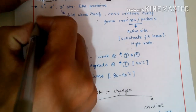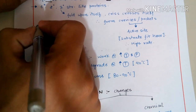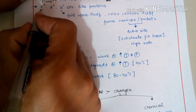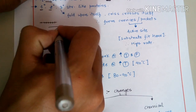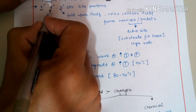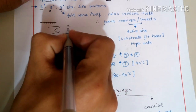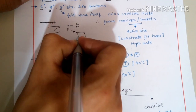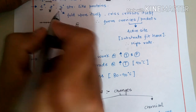Since proteins have different conformations, enzymes — being mostly proteins — also have a primary structure, which is the linear arrangement of amino acids. They have a secondary structure, which is the folding of that chain, including the alpha helix and beta pleated sheet forms.